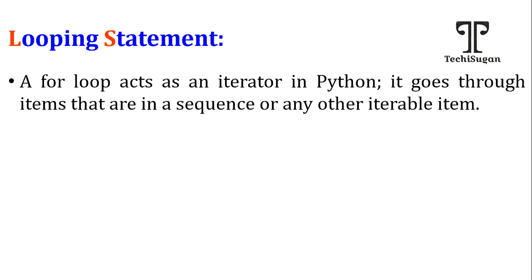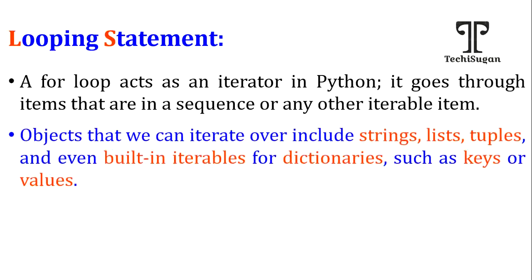The for loop acts as your iterator in Python. What is an iterator? An iterator is nothing but accessing sequential elements — either starting from 1 to 100, or 1 to 1000, or 1 to 10. By using this looping, I can access sequential elements which act as an iterator. This loop is also used for accessing an iterable item — it might be a string, a list, a dictionary, or a tuple.